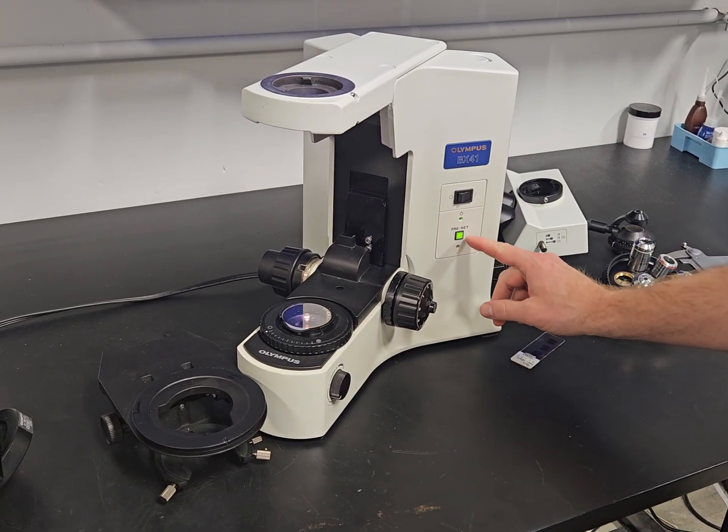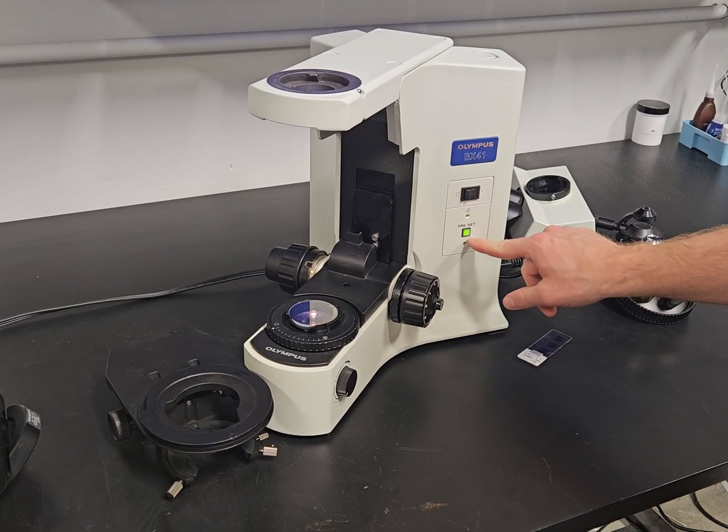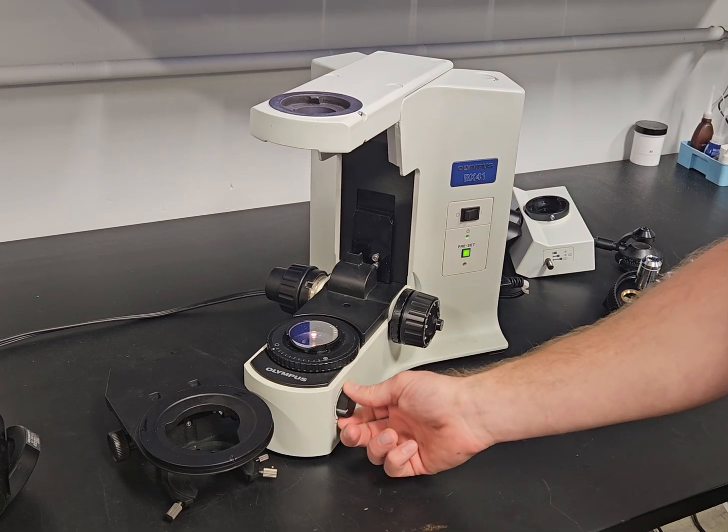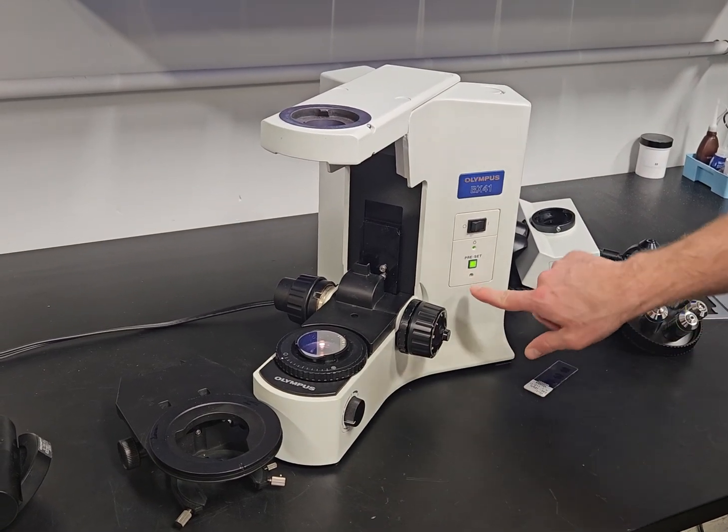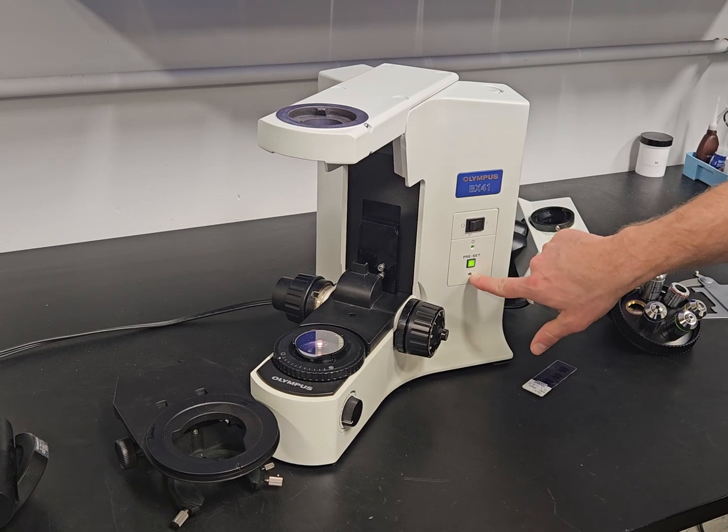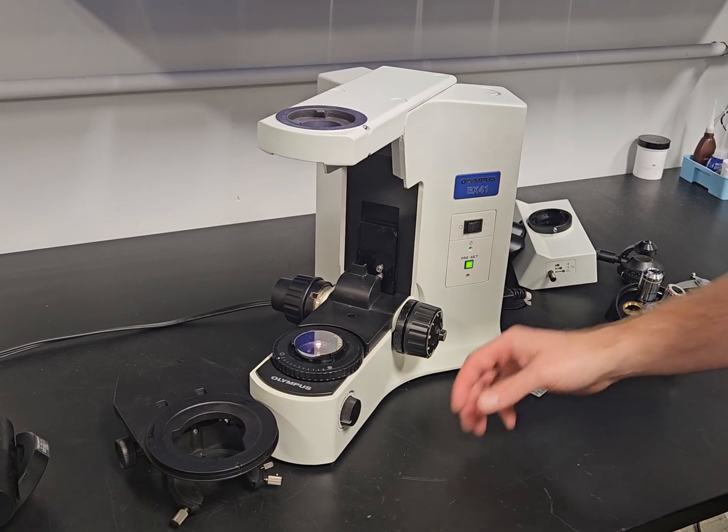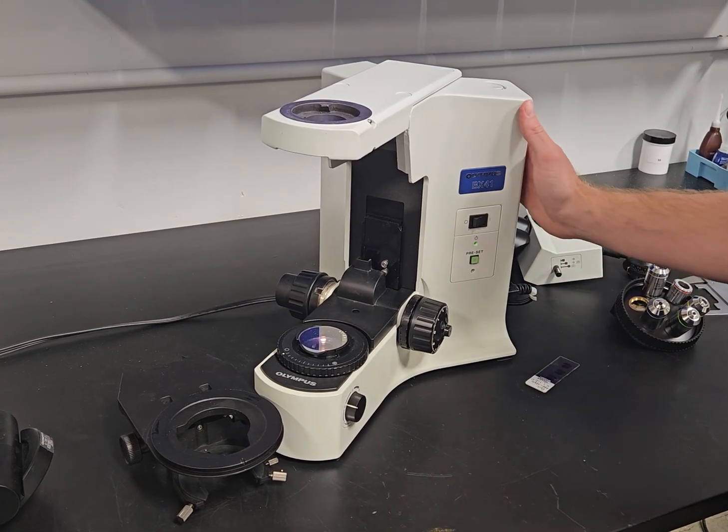If this is pressed and you'll notice that it illuminates green, what it does is it holds the light. So now we can't adjust the light. If you find the perfect light for you, you can adjust it with a little flathead screwdriver in there and set it. When that button is pressed, no one can change the light. So if you have multiple users, that's a really handy feature.